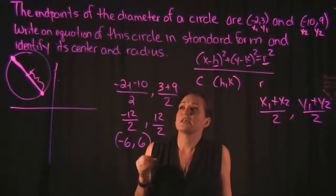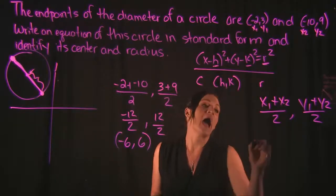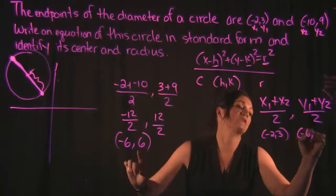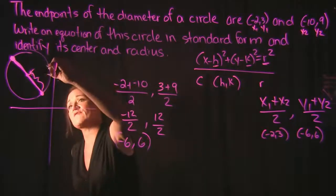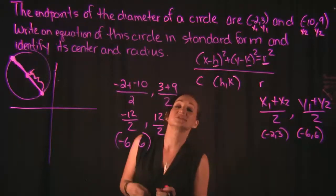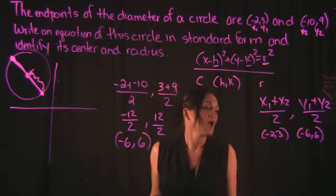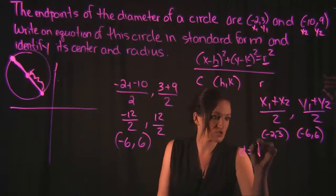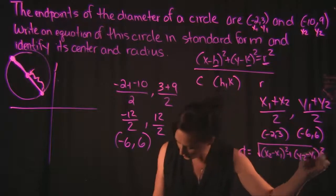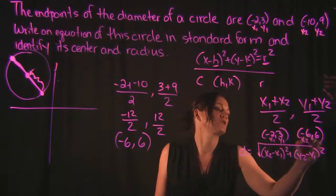The radius is the distance from the center out to the edge of the circle. To find it, pick one of the endpoints — I'll pick negative 2, 3 — and use the center we just found, negative 6, 6. We'll use the distance formula: distance equals the square root of (x2 minus x1) squared plus (y2 minus y1) squared. Label negative 2, 3 as x1, y1 and negative 6, 6 as x2, y2.